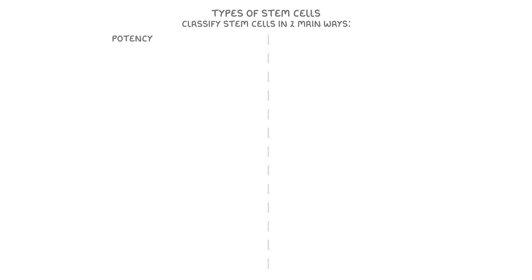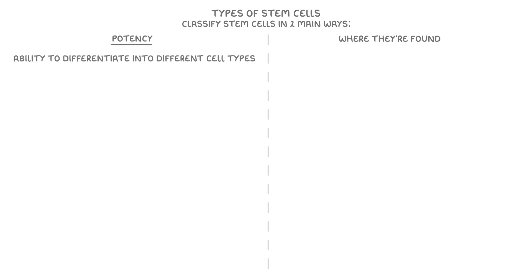Next, let's explore the different types of stem cells. We can classify stem cells in two main ways: either based on their potency, or based on where they're found. Starting with potency, this is the stem cell's ability to differentiate into different cell types, and we can rank it from the most potent types of cells to the least potent types of cells.